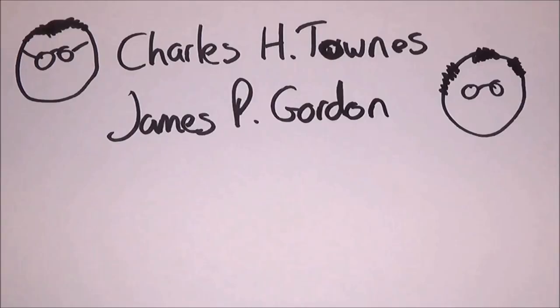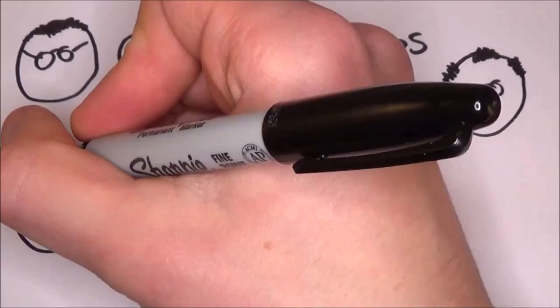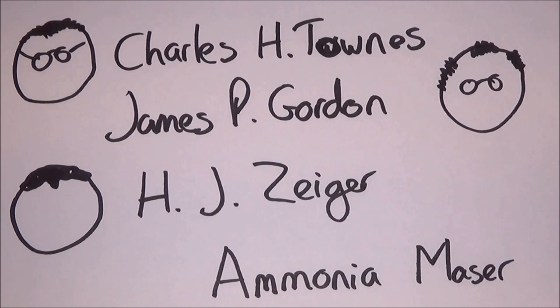built the first ammonia maser at Columbia University in 1953. It worked very similar to the hydrogen maser, but it used ammonia instead of hydrogen. It wasn't until 1964 that Townes, Basov and Prokhorov were given the Nobel Prize in Physics.